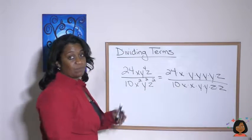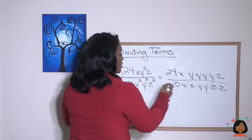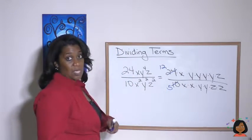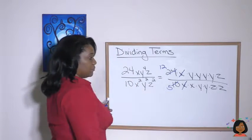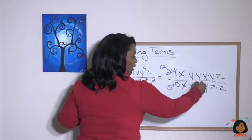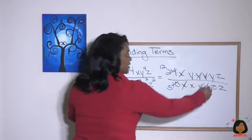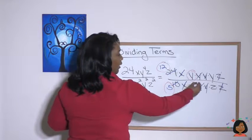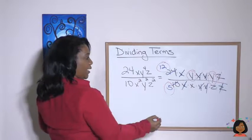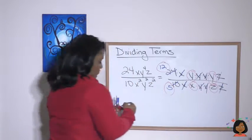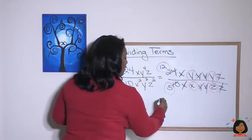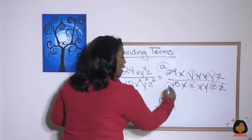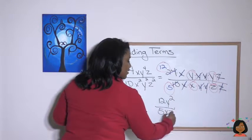Let's simplify by canceling. We have a 10 and a 24 — what number goes into both? We can start with 2: 2 goes into 10 five times, 2 goes into 24 twelve times. Let's cancel out what else we can: x there, x there. I see a y here and a y here, a y here and a y there. And one more set of z's we can cancel out. What are we left with? We've got a 12, a 5, two y's remaining, and on the bottom an x and a z. So that gives us 12y squared over 5xz.